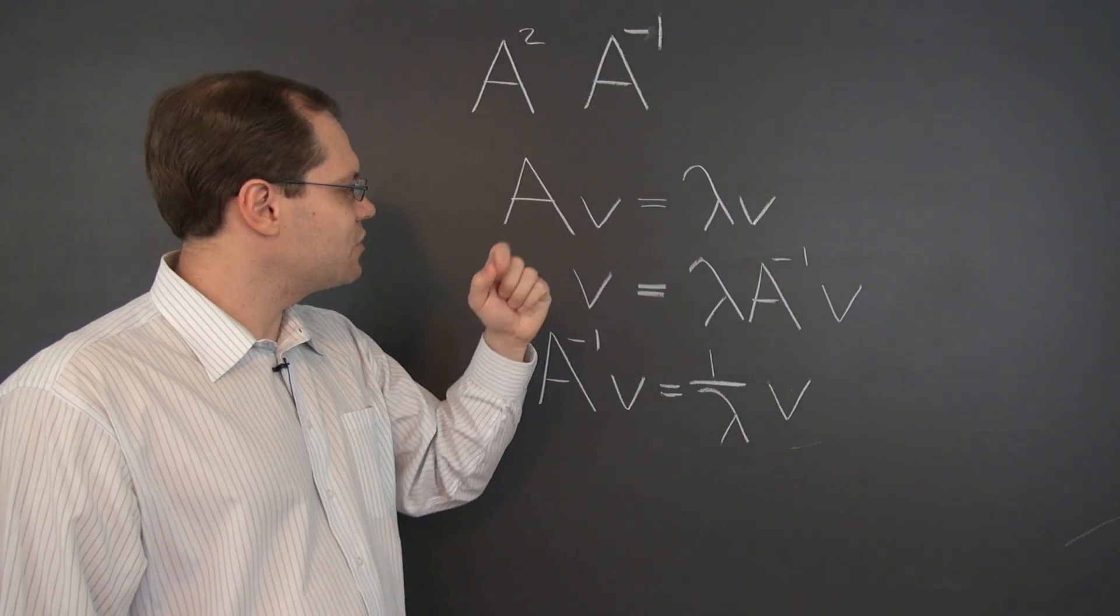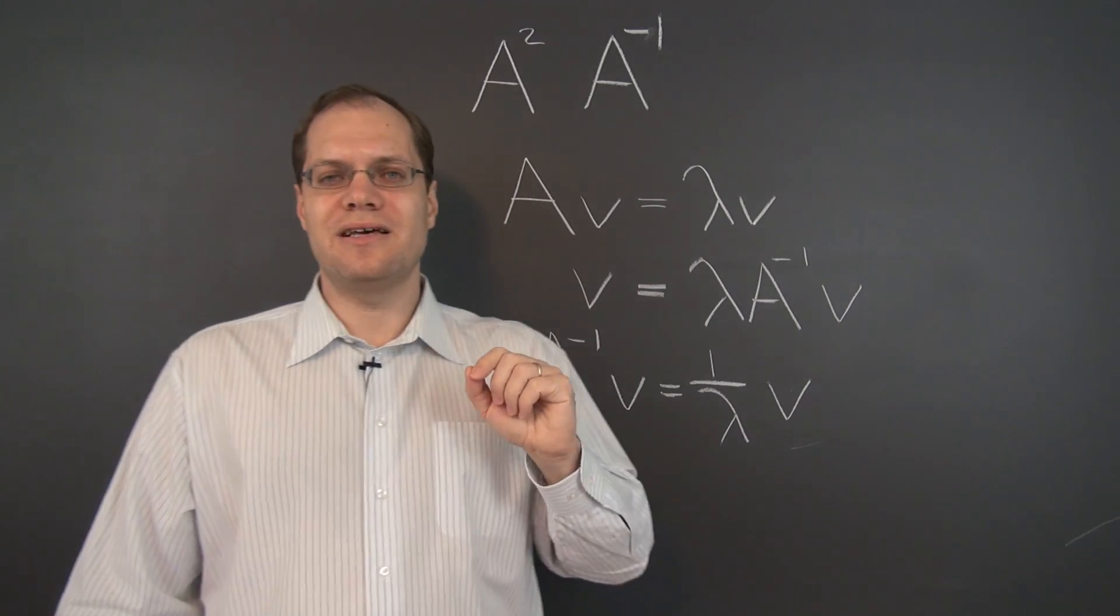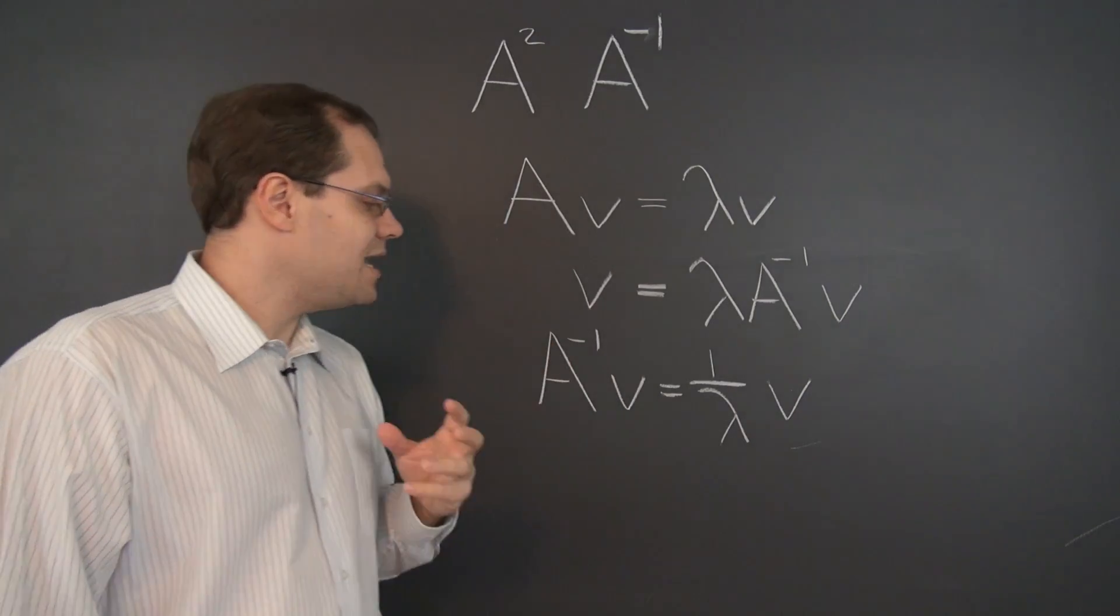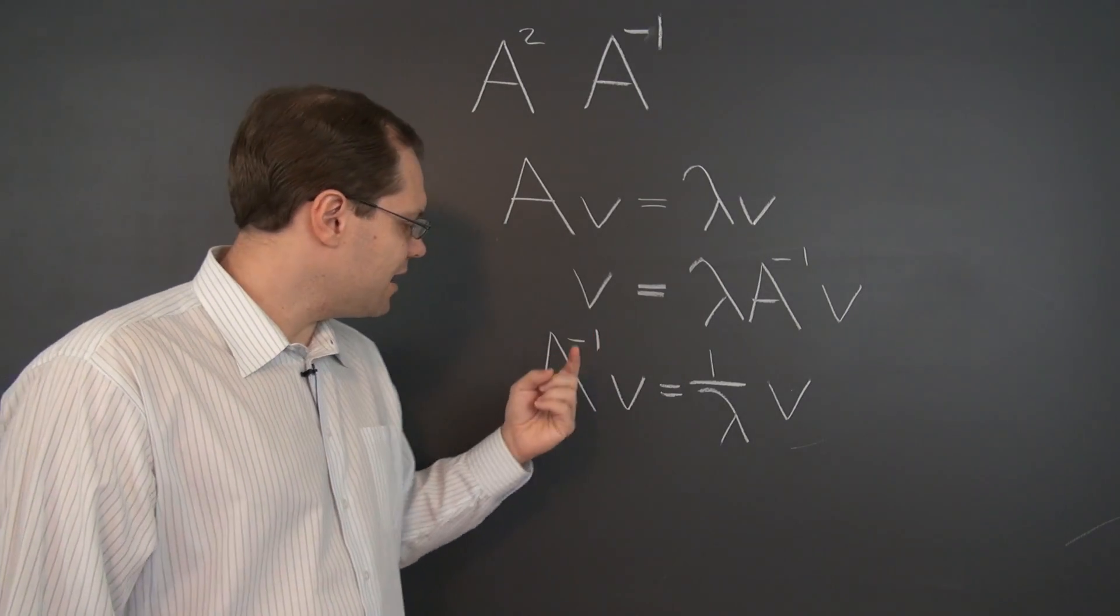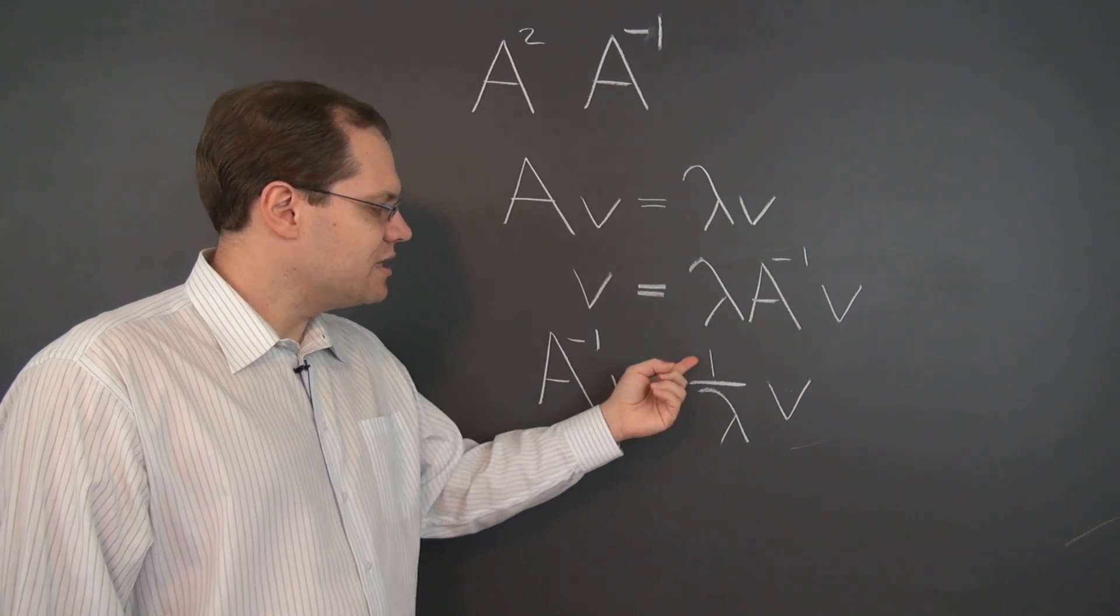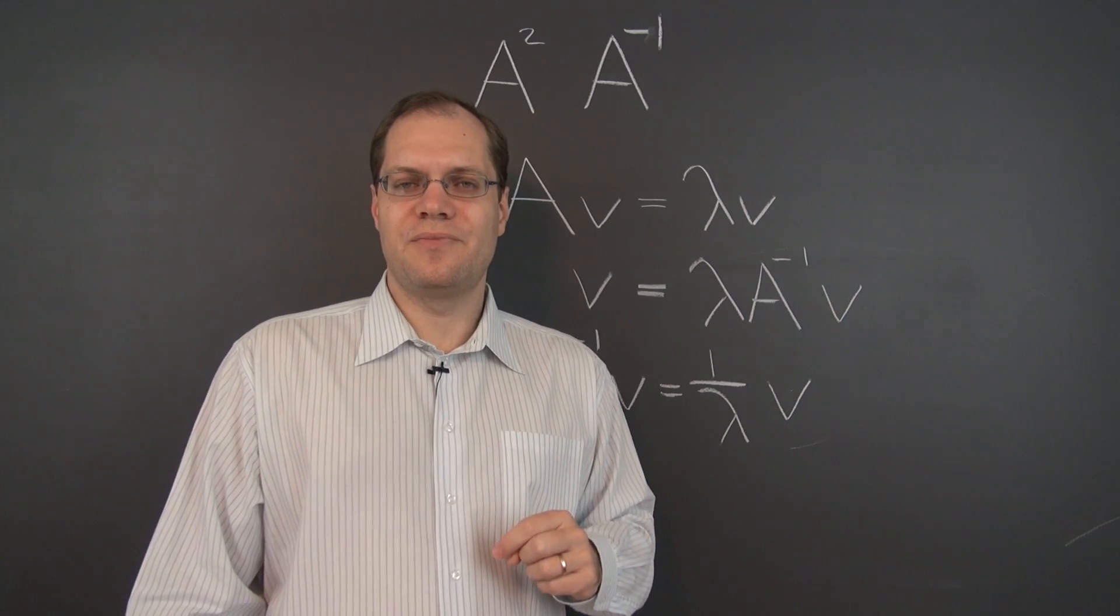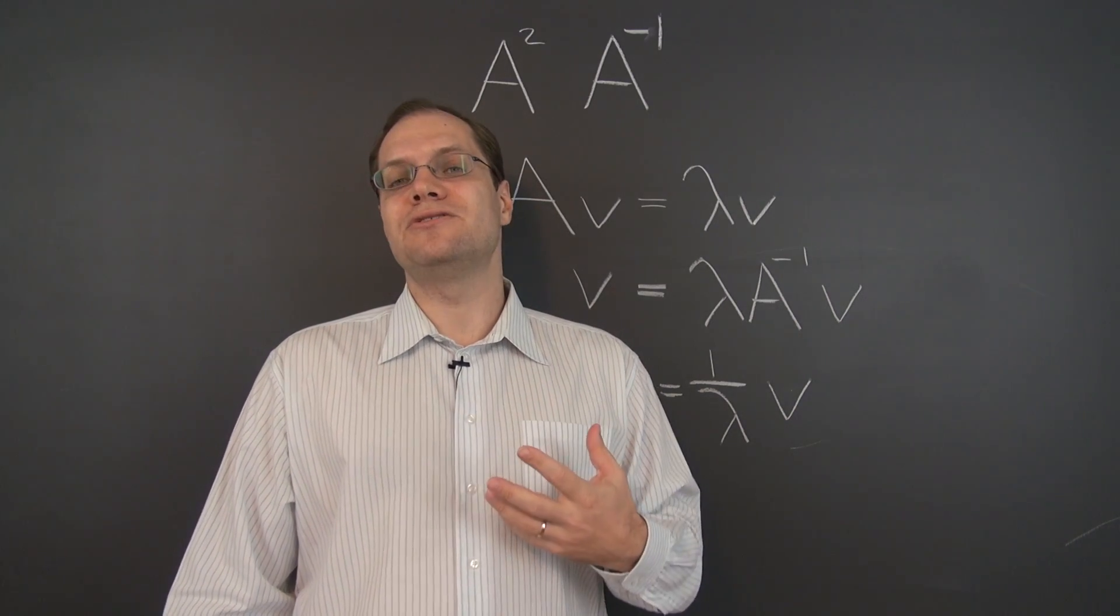So the matrix A inverse and A, assuming that none of the eigenvalues is zero, have the same eigenvectors, and the eigenvalues of A inverse are the reciprocals of the eigenvalues of A. So that's the relationship.